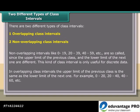In overlapping class intervals, the upper limit of the previous class is the same as the lower limit of the next one. For example, 0 to 20, 40 to 60, etc.